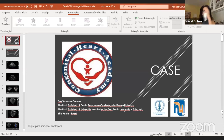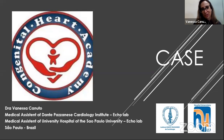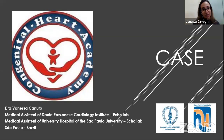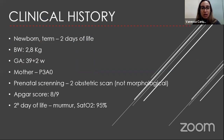Hi everyone. I'm so glad to be here and have the opportunity to present a case for the Congenital Heart Academy. I want to thank especially Grace, who is a Brazilian in the international scenario — she inspired us. I'm Vanessa Canuto, a medical assistant of the Ecolab at the Incor Cardiology Institute and at the University Hospital of São Paulo University in São Paulo, Brazil. My case is about a term newborn, two days of life, birth weight 2.8 kg, gestational age 39 plus two weeks, the third pregnancy with no abortions, prenatal screening with two obstetric scans but no morphological study. APGAR score was eight and nine.